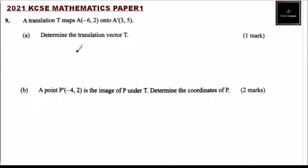Part A: Determine the transition vector T. Part B: Point P'(-4, 2) is the image of P under T. Determine the coordinates of P.